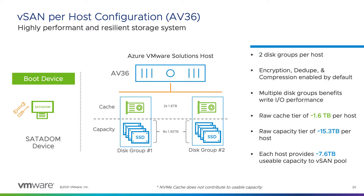Each host is comprised of two disk groups that contain a 1.6 terabyte NVMe cache tier and an SSD-based capacity tier with eight 1.9 terabyte disks, providing about 15.3 terabytes of raw capacity per host. Raw capacity can be calculated by multiplying the host capacity by the number of hosts within the cluster. For example, a three-host cluster provides just over 46 terabytes of raw capacity.